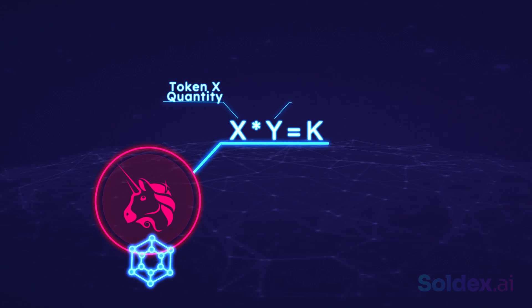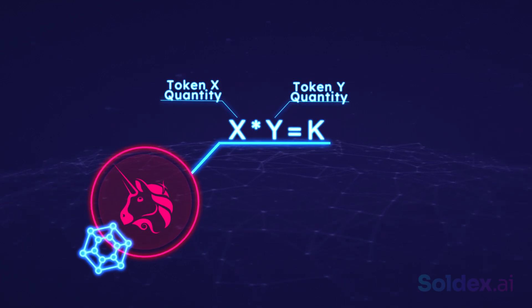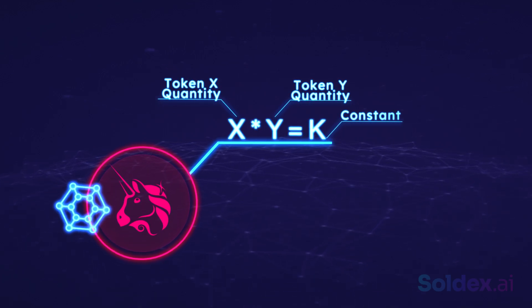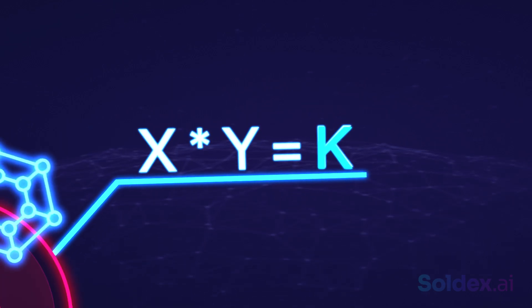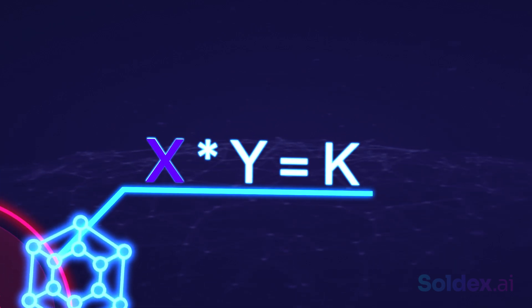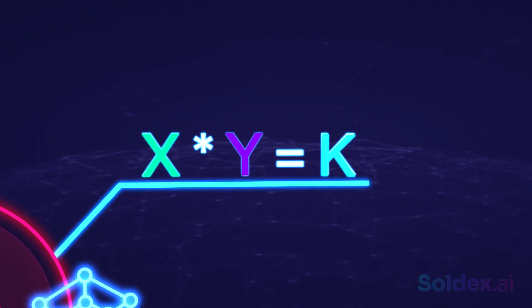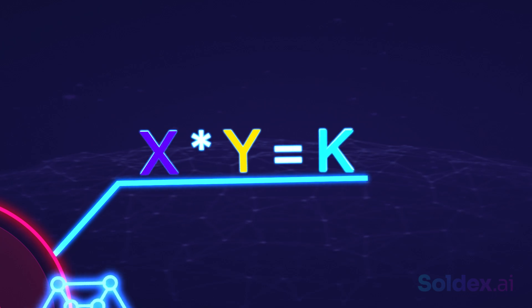Where X and Y are equal amounts of a liquidity pool's assets, while K is the total or constant amount of pool liquidity. In this formula, K is fixed, which means that despite the different prices of X and Y, the pool's total liquidity must always remain the same.